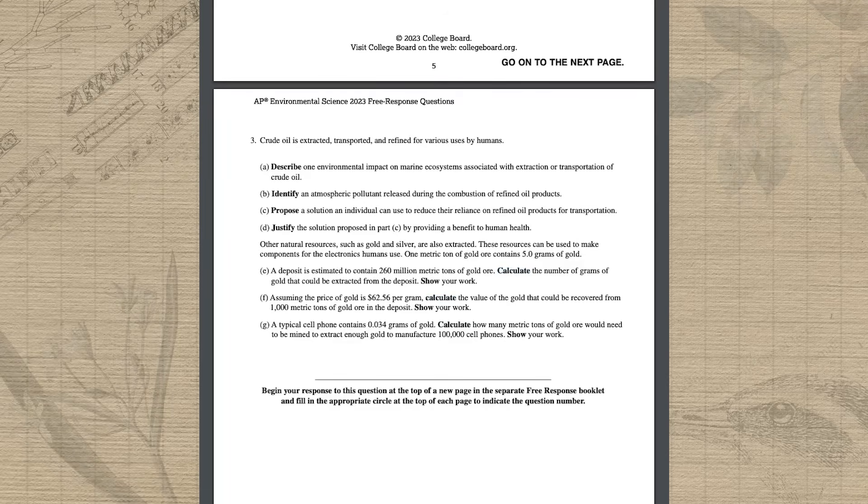Each math problem is worth one point for the correct setup and one for the correct answer. Now that we've covered the structure of the exam, let's talk about how to study. In a class like APES with 9 units and 99 topics, it's not practical for most students to review every single piece of information. If you did a decent job taking notes and being engaged in class, you probably don't need to review every single topic — that's where the individualized study plan comes in.